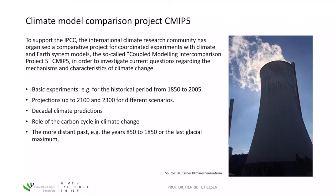That's the Climate Model Composite Project CMIP5. It is made to support the IPCC to compare the different climate models and prove that they are right. The models must be able to reproduce measurements from the historical period from 1850 to 2005, and then project up to 2100 and even 2300 under different defined scenarios. There are also decadal climate predictions in order to synthesize the results.